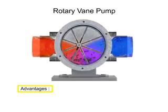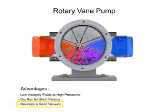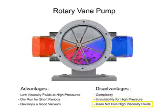The advantages of vane pumps are that they can handle low viscosity fluids at relatively higher pressures, can dry run for short periods, and develop a good vacuum. Their disadvantages include complexity and their unsuitability for both high pressure and high viscosity fluids.